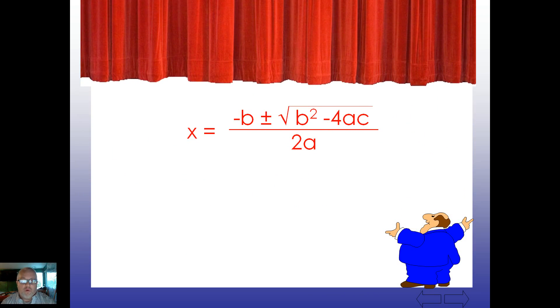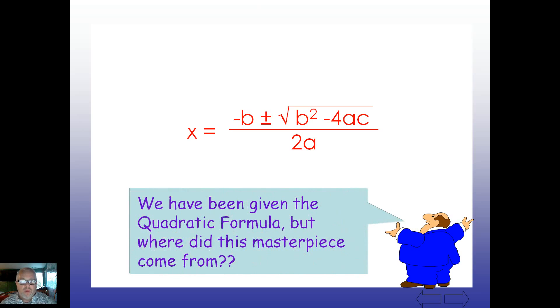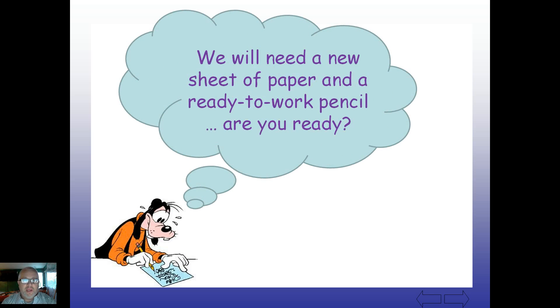Here we have an unveiling of our, of course, our quadratic formula. And we have a question here. We've been given the quadratic formula, but where did this masterpiece of mathematics actually come from? I mean, someone, how did they just dream it up? How did someone come to this conclusion and were able to benefit from their discovery here? So we're going to need a new sheet of paper and a ready-to-work pencil, okay? So make sure you're ready to go. Please follow along, and I'll go as slowly as I need to, but as quickly as we can.